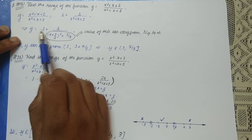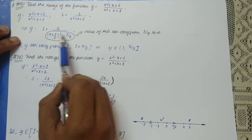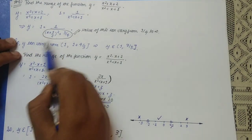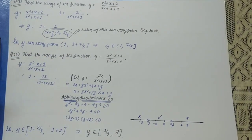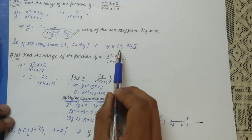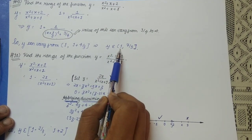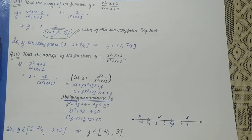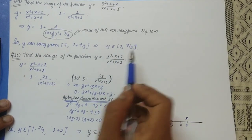The value of y varies from 1 + 1/(3/4) to 1 + 1/∞, that is from 1 + 4/3 = 7/3 down to 1. So y ranges from 1 to 7/3. Here 1 is not included, as y = 1 occurs when x = ±∞, which cannot be included. So the range of y is (1, 7/3].